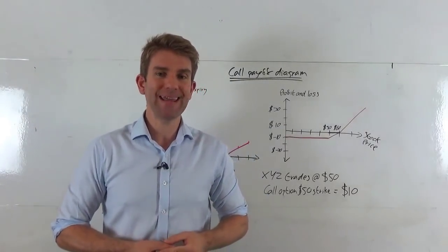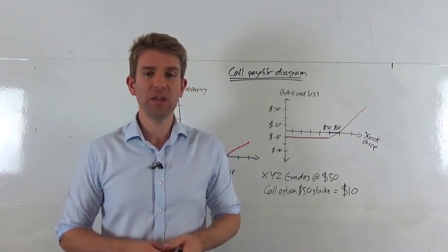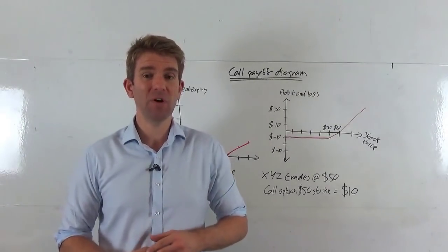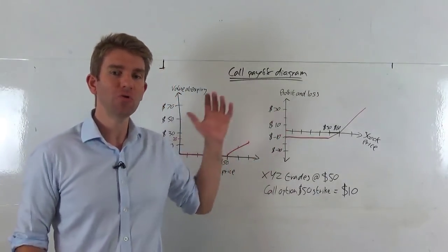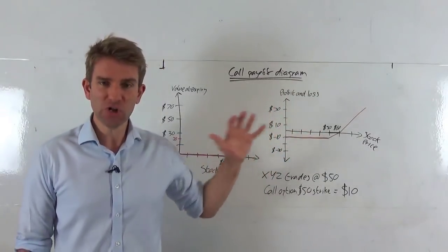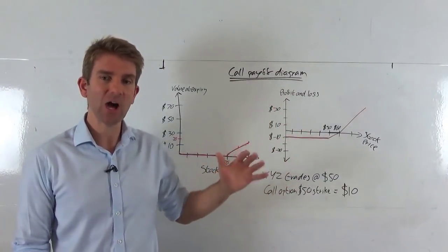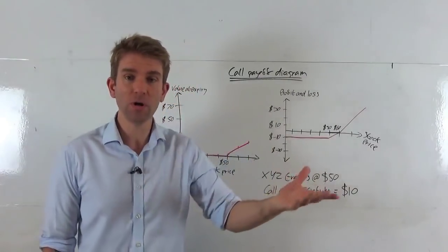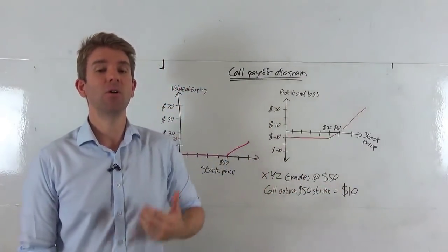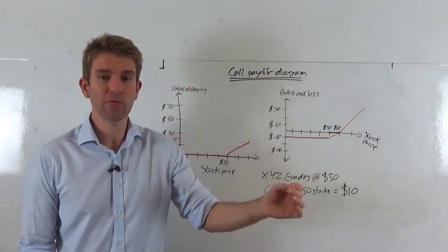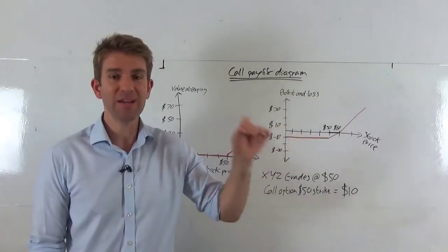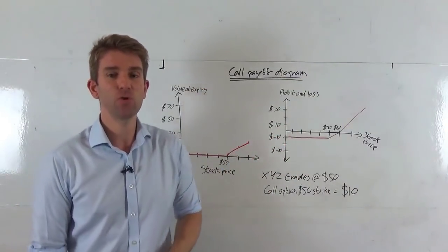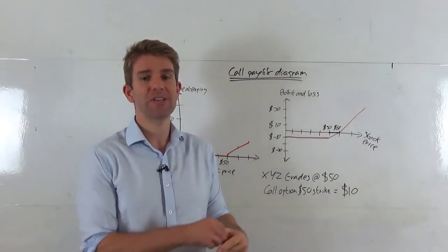Options trading can be very profitable, but can also be a bit of a nightmare to understand. We're looking at two graphical ways of visualizing how a call option will be worth something to you or not, depending on the strike price, depending on the expiry, and depending on the underlying asset price relative to the strike price at expiry.